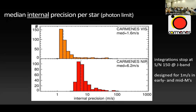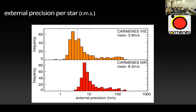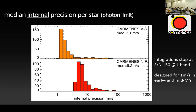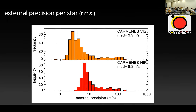That's essentially the take-home message. In addition to the planets and many other things we have learned: here's the external precision — the RMS. If you subtract this plot from that one quadratically, you get the RV jitter in the different instruments.